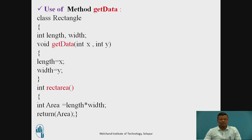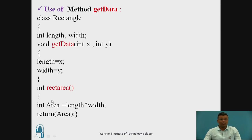Now, first we will discuss the recap of the second session, where we have discussed the getData method, which consists of the variables length and width, with the variables x and y, with the data type integer, where we had said that length is equal to x and width is equal to y. This will be called as the getData method. There is one more method which consists of the formula for the area of rectangle, stored in the method rectArea.